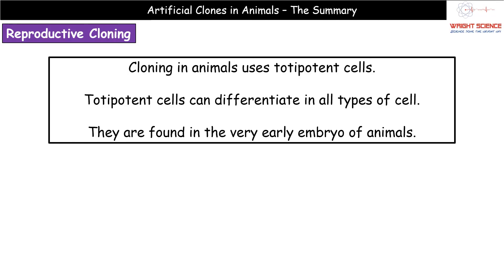When we're considering artificial clones in animals, we need to first understand what we're using. When we're talking cloning in animals, we are going to be using totipotent cells. Hopefully we remember the meaning of the word totipotent — if you think of 'toti' like total, this is the one that can actually differentiate into all types of cell.